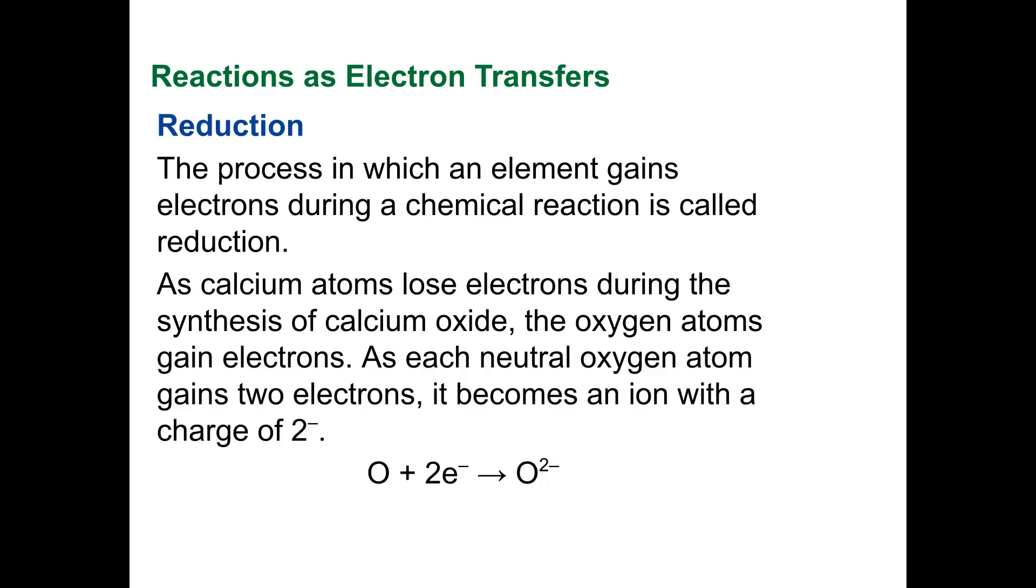As each neutral atom, meaning it's perfectly balanced, same number of protons, same number of electrons—as each neutral oxygen atom gains two electrons, it becomes an ion with a negative two charge.